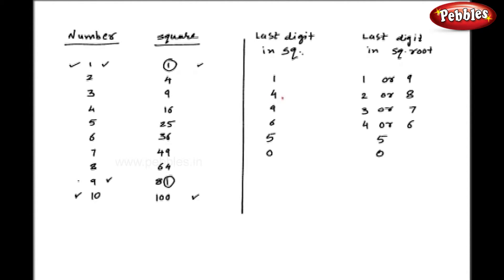Similarly, whenever number 4 is there as a last digit in square, we will have 2 or 8 as last digits in square root. For number 9, it is 3 or 7. For number 6, it is 4 or 6 as last digits in square roots.